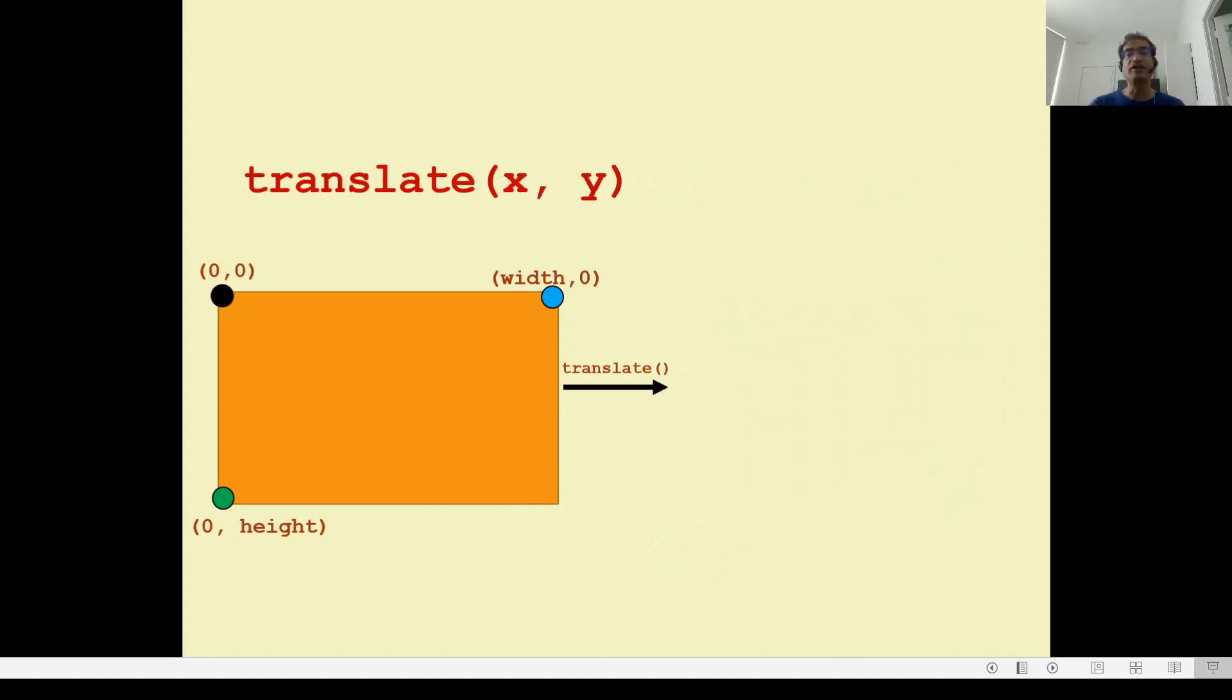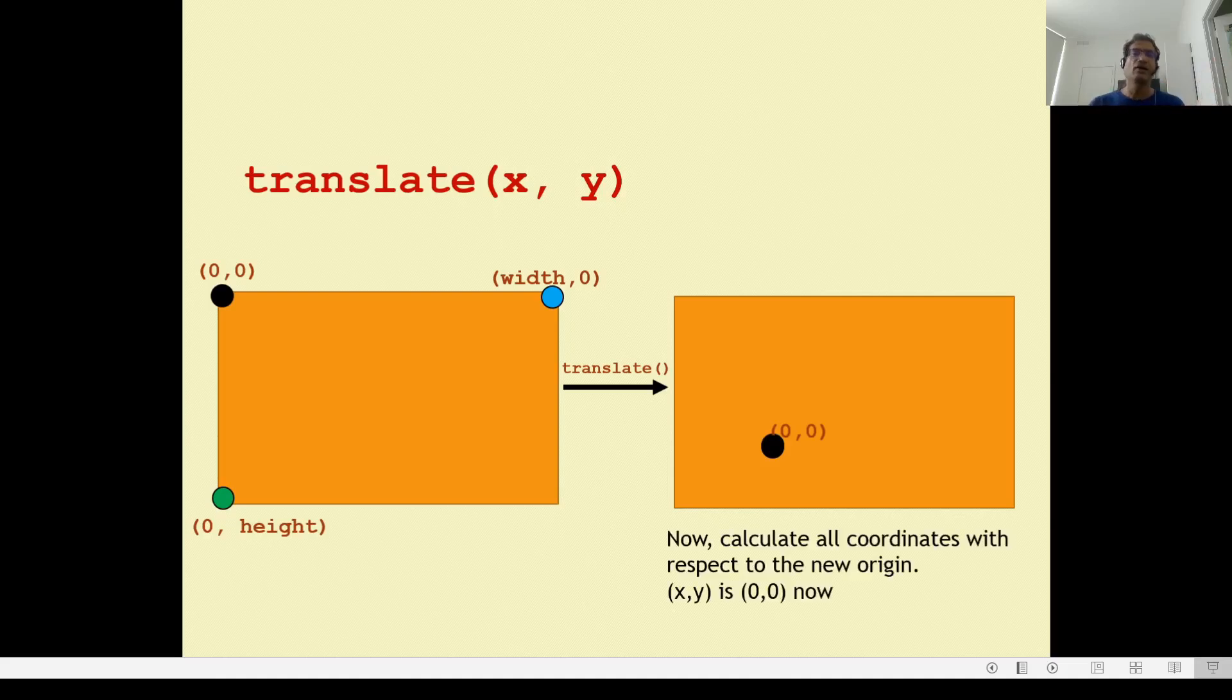Now, this turns out really, really powerful because we don't have to do this only for width by two, height by two. You can take any x, y point in your canvas, and you can move your origin to there temporarily. You can do push matrix, pop matrix, you translate, then you calculate everything, all the coordinates with respect to this new origin, you draw whatever you need to do, and then when you're done, you can pop matrix back.